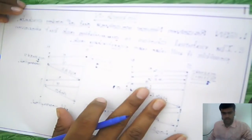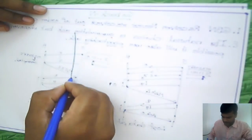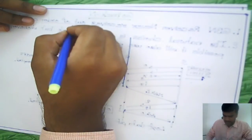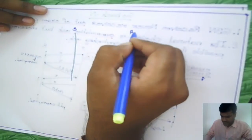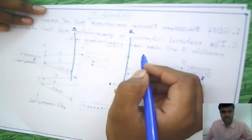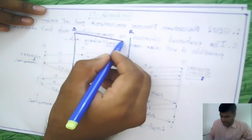And then we have one more problem that, like we have seen in stop and wait protocol, there is a chance that acknowledgement may be lost. So let us see.